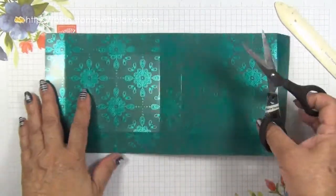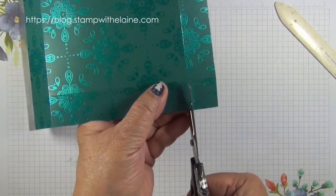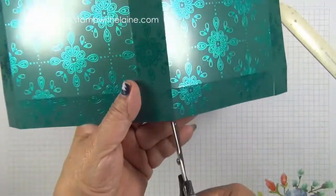Now you want to cut up with the long side facing you. You want to cut straight up on the score lines to create your tabs.